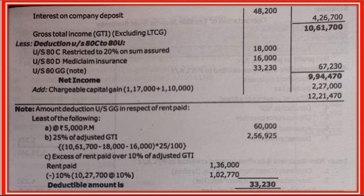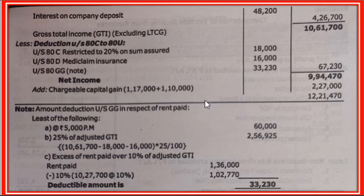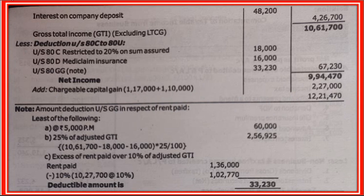Long term capital gain in respect of commercial building and long term capital gain in respect of shares (non-listed): 1,17,000 plus 1,10,000 equals total 2,27,000 is added to total income. Tax liability: long term capital gain taxed at 20 percent, winning from lottery at 30 percent, balance of income at slab rates. We will see the rest of the problems in the next series of videos. Thank you.